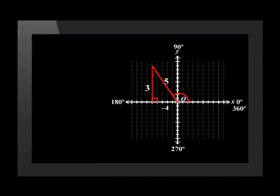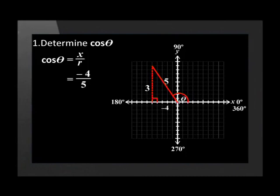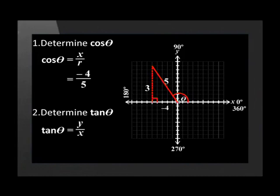Let's use this sketch to answer the questions. First, determine cos theta: we know that cos theta equals x over r, therefore cos theta equals negative 4 over 5. Second, determine tan theta: we know that tan theta equals y over x, which means tan theta equals 3 over negative 4.